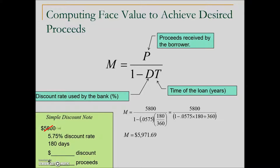This means the individual would have to ask for this face value for the discounted loan so that they would come away with the proceeds — the amount of money they needed for their home improvements. It's a higher amount. So when you calculate the bank discount, you can see it's higher than in the original question asking for $5,800, but it achieves the amount of money that they were in need of.